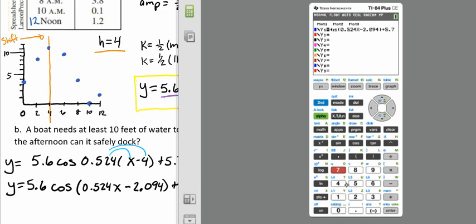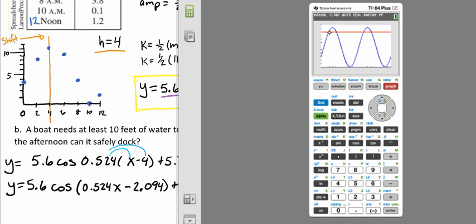We need to adjust our table to fit. We'll go to our window and make an x minimum of 0 and an x maximum of 24, counting by 1's. We'll make a y minimum of 0 and a y maximum of 12, counting by 1's. We're also going to add in y equals 10 because the boat needs at least 10 feet of water to dock. This will make graphing and seeing our answer easier. We'll go ahead and push graph.